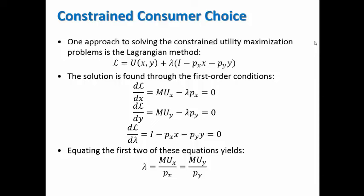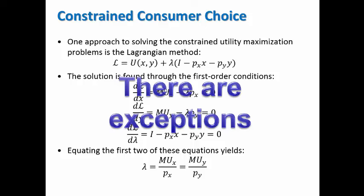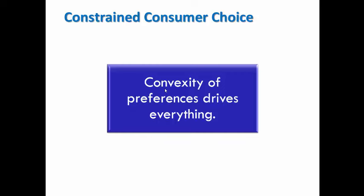Most of the time, when faced with a budget constraint, consumers will maximize their utility by choosing a bundle on their budget line at a point of tangency to an indifference curve. However, there are exceptions. These exceptions depend on preferences. Whether or not indifferences are convex makes a big difference.